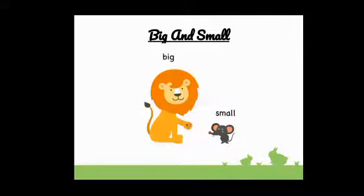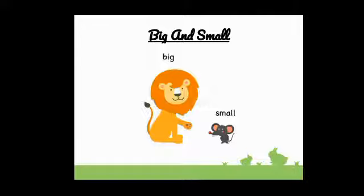Now I will show the next picture. In this picture, you can see big and small. So big is the opposite of small. It's a beautiful picture — you can see a loin. It is big in size, and mouse is small in size. So the opposite of big is small. Big and small — the opposite of big is small.